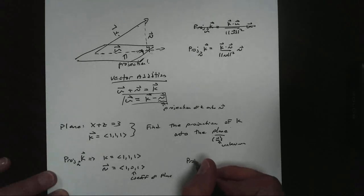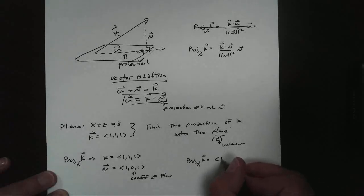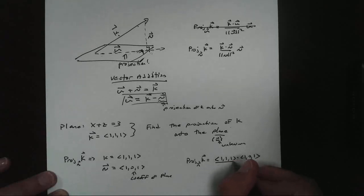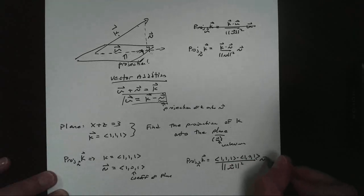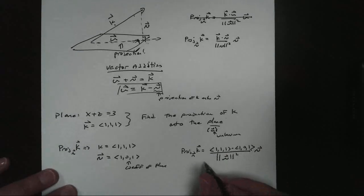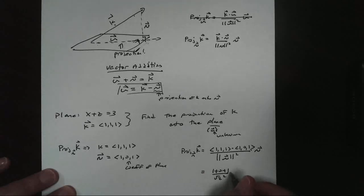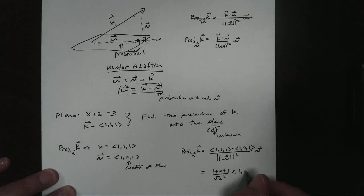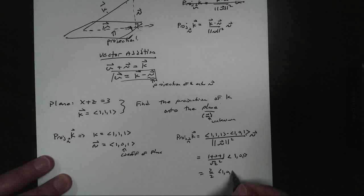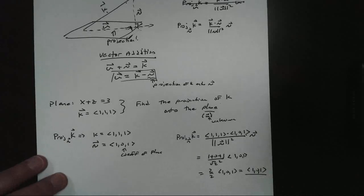To get the projection of K onto the normal vector N, we use the dot product formula: (K · N) divided by |N|² times N. So we compute (1,1,1) · (1,0,1), which gives 1 plus 0 plus 1, all over the square root of 2 squared, times (1,0,1). This becomes 2 over 2, times (1,0,1), which simplifies to (1, 0, 1). So that is our projection of K onto N.